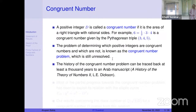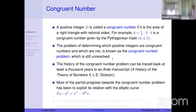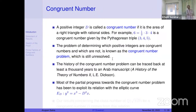This history can be traced back at least a thousand years, according to the history of number theory by Dickson. Most of the partial progress on the congruent number problem has come from its association with elliptic curves.